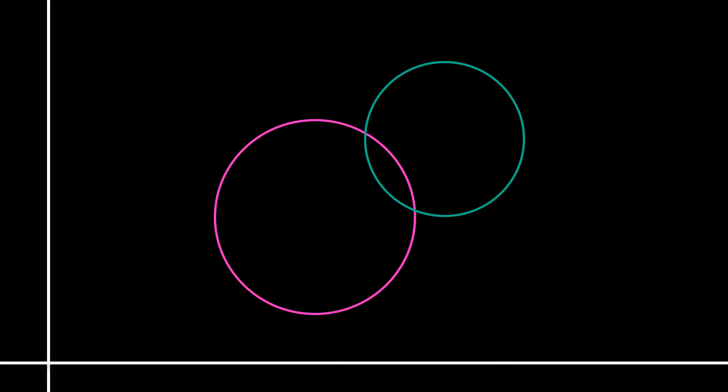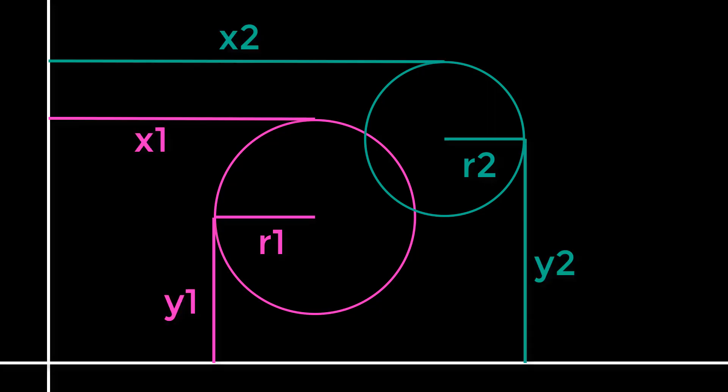First up, consider the collision between two circles. If you don't know how this is done, I encourage you to pause the video and try to work this out on your own. It's a good exercise. So what information do we have available about these circles? We're probably going to have the radii and we probably have their positions.